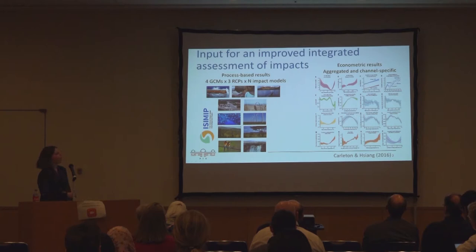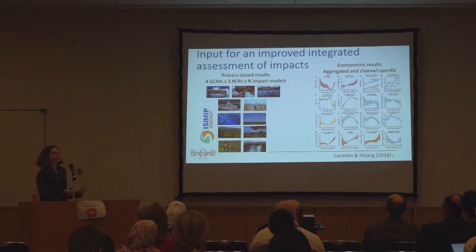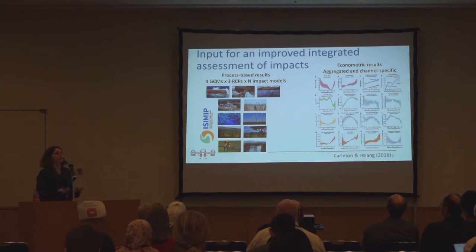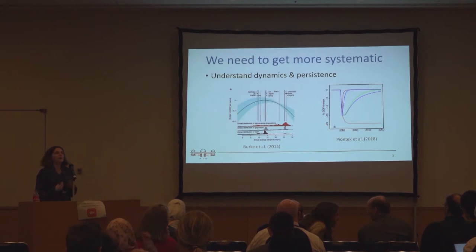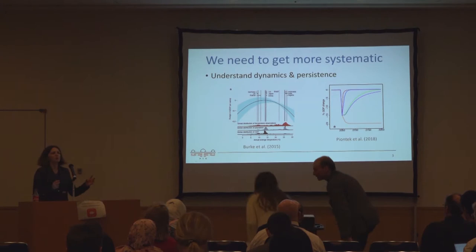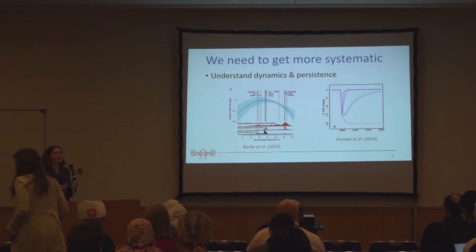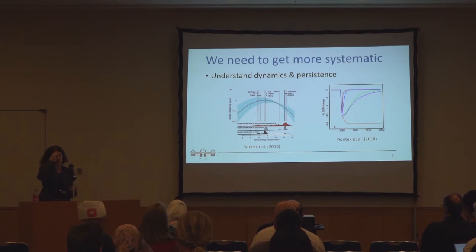We also have all of these econometric results, both aggregate — as in the often cited work by Burke et al. — but also on many different aspects of the socio-economic system. But how do we really take this and understand the economic effects and the general socio-economic consequences? There is an impressive amount of work already happening, and I think it's really a moment in time where as a community we should step back and think about this in a more systematic way.